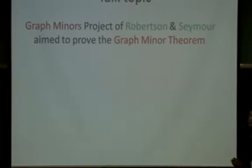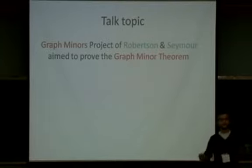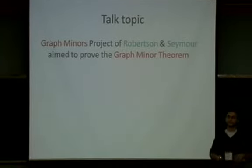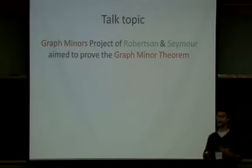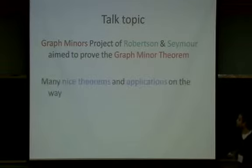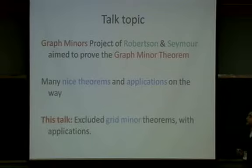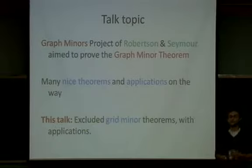The topic of the talk is algorithmic graph minors. The graph minors project of Robertson and Seymour set out essentially to prove the Wagner conjecture, which they did, but on the way they proved a lot of other cool stuff, and that other cool stuff is useful elsewhere. Specifically, we're going to talk about the excluded grid theorem, and how it can be applied in order to give algorithms for NP-hard problems.